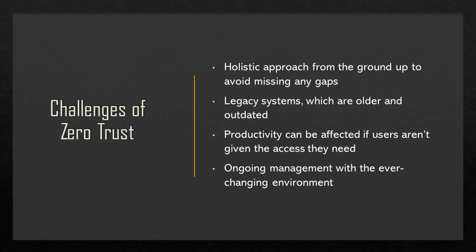Productivity and availability are arguably just as important as security itself from a business standpoint. When there's a change in access protocols, there may be risk in how productivity is affected. If a user isn't able to access the applications and tools they need to perform their job in a timely manner, it may not seem worth it to an organization to implement zero-trust. However, making sure it is a good model can mitigate these risks, and zero-trust can be set up to respond quickly when changes need to be made.